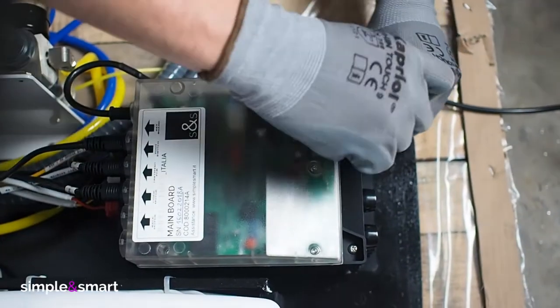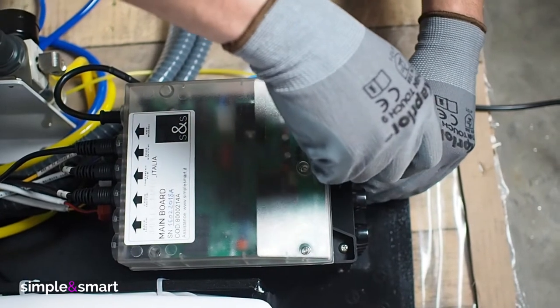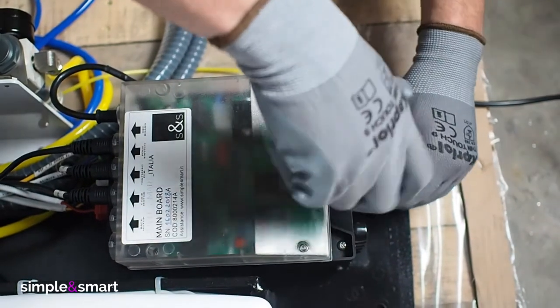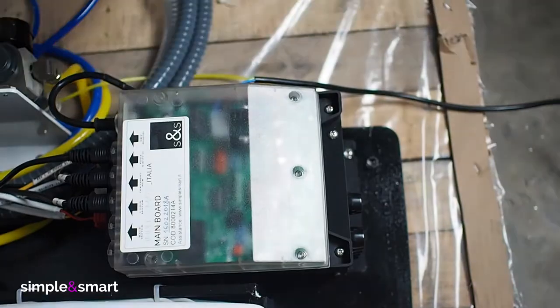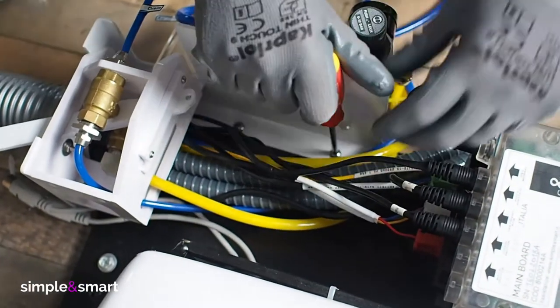Unscrew the two black box screws and the two of the white metal structure to remove it from its place.